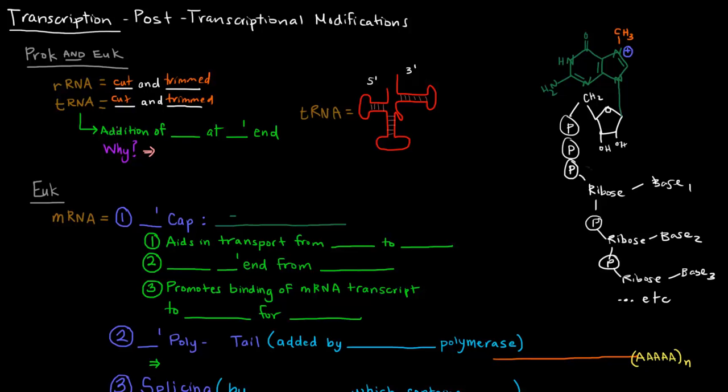The tRNAs have a further modification. There is an addition of a CCA at the 3' end. So you add two cytosines and an adenine at the 3' end. So if this is a tRNA, we're going to be adding a C, a C, and an A here at the 3' end of a tRNA.